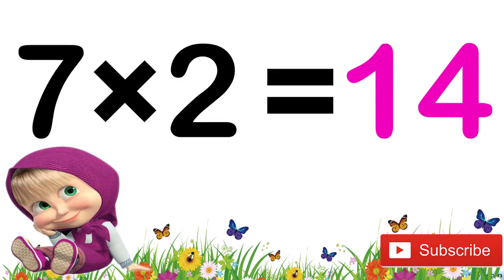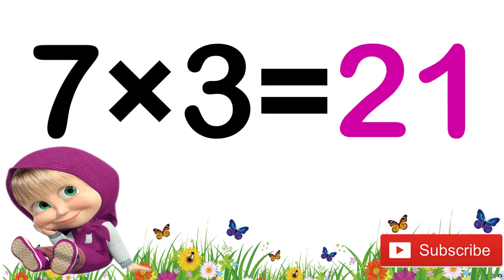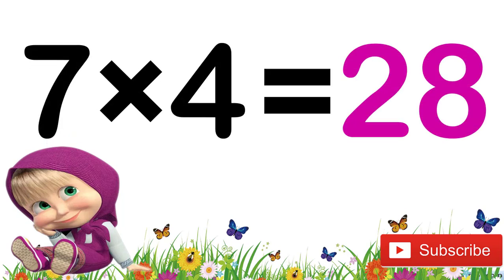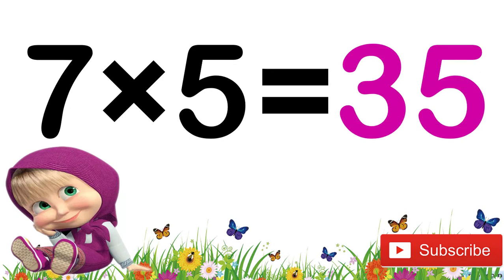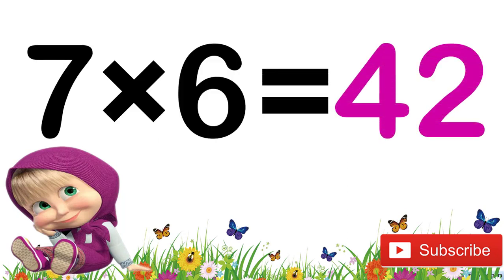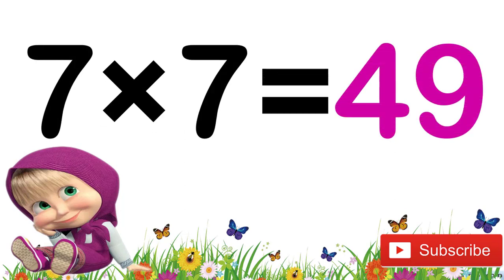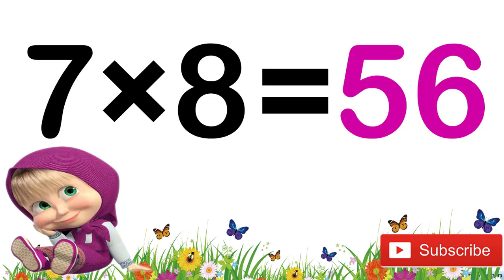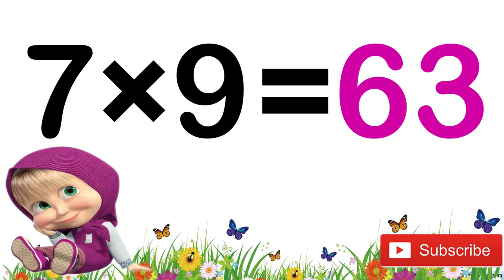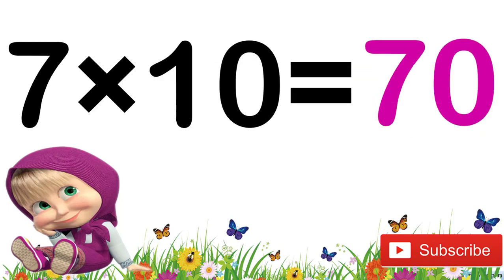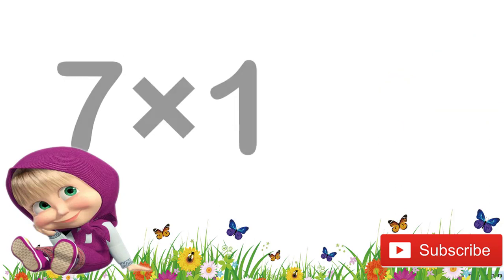Now let's revise again children. 7 ones are 7. 7 twos are 14. 7 threes are 21. 7 fours are 28. 7 fives are 35. 7 sixes are 42. 7 sevens are 49. 7 eights are 56. 7 nines are 63. 7 tens are 70.